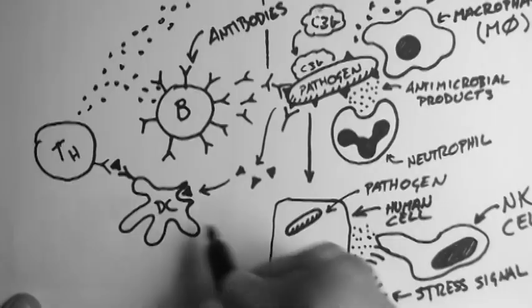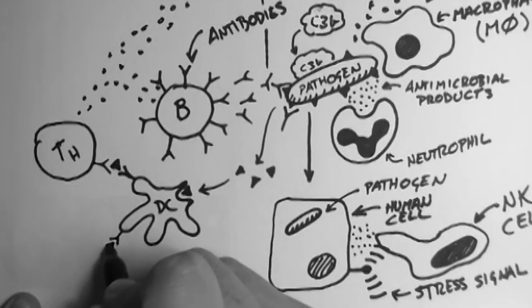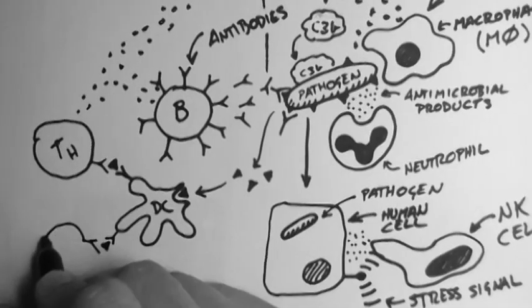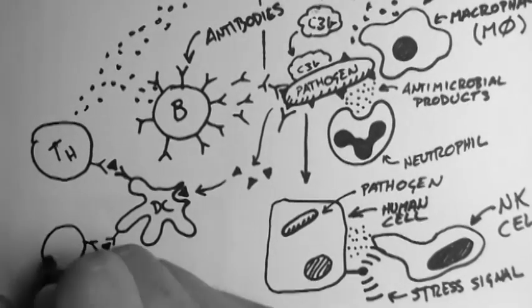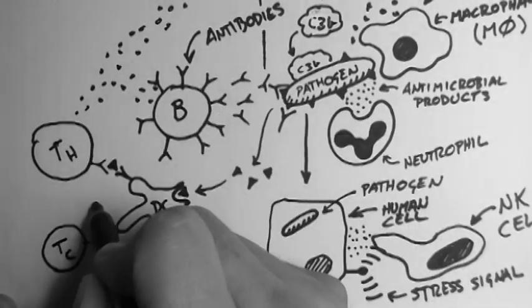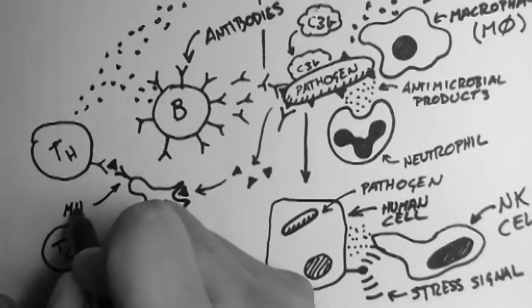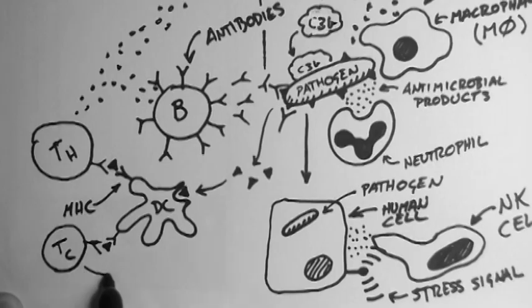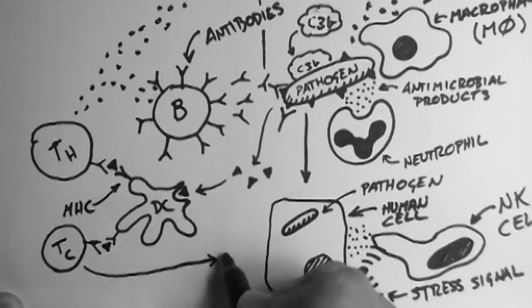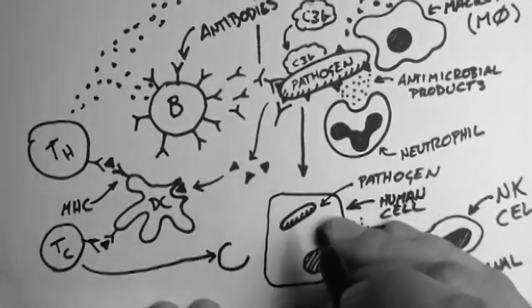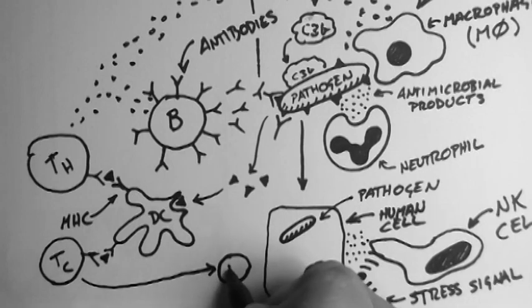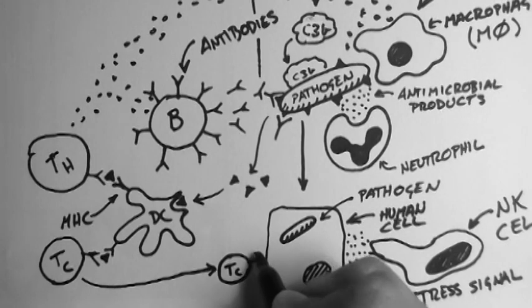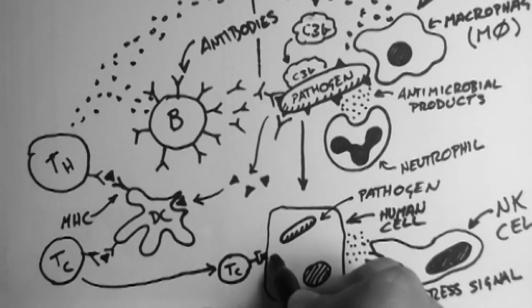Now the other type of T cell, a cytotoxic T cell, receives this signal from the dendritic cell on that MHC molecule. It then goes and finds infected human cells and gets them to die and take the pathogen with them.